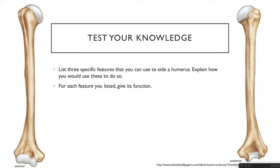To side a humerus, useful features include: the head, which indicates you're looking at the medial view; the tubercles — seeing both the lesser and greater means you're on the anterior side, seeing only the greater means posterior; the medial epicondyle, the large bump on the medial side; and the capitulum, which is only visible from the anterior side.